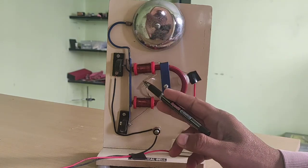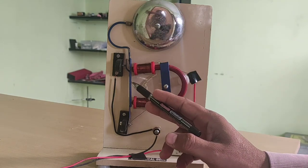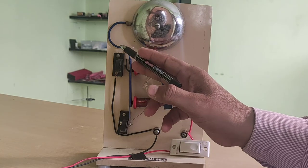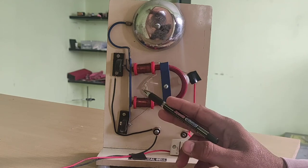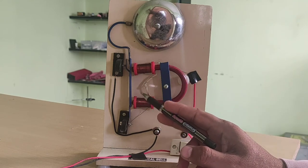Whenever this electromagnet attracts this iron strip, this hammer strikes on the gong and the bell rings. This process happens in succession and bell rings.